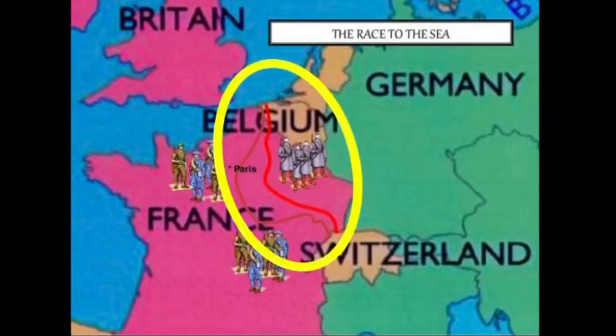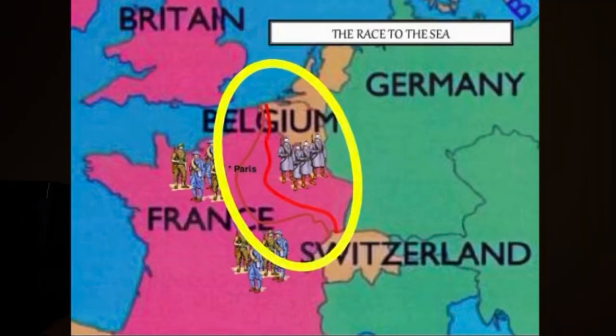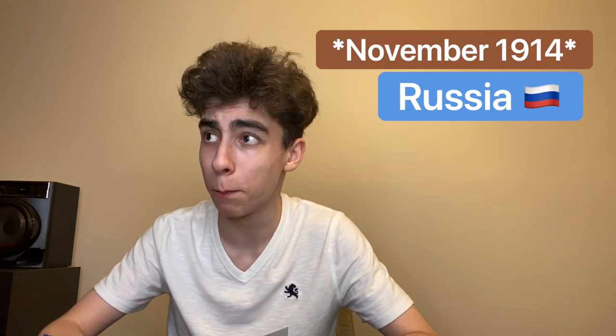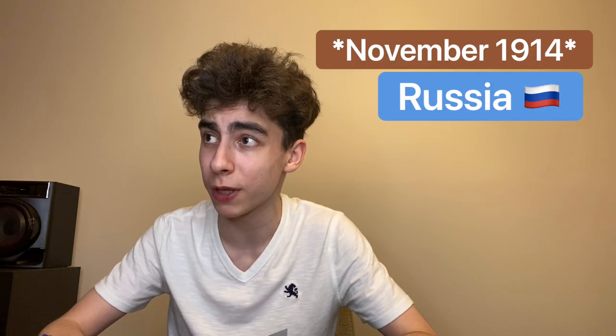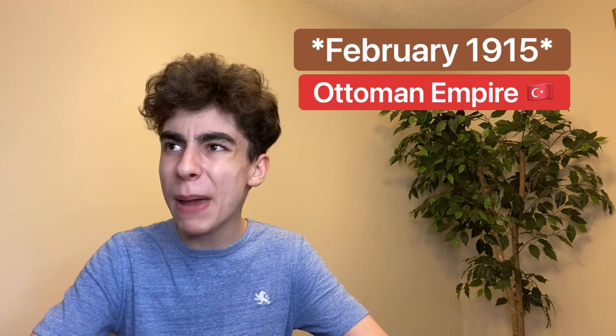The Allied Powers of the west — Great Britain and France — and the German Empire, a Central Power which also included Austria-Hungary and the Ottoman Empire, had dug approximately 700 kilometers of trenches stretching from the North Sea all the way to the Swiss border, trying to outflank each other and resulting in a deadlock in the west.